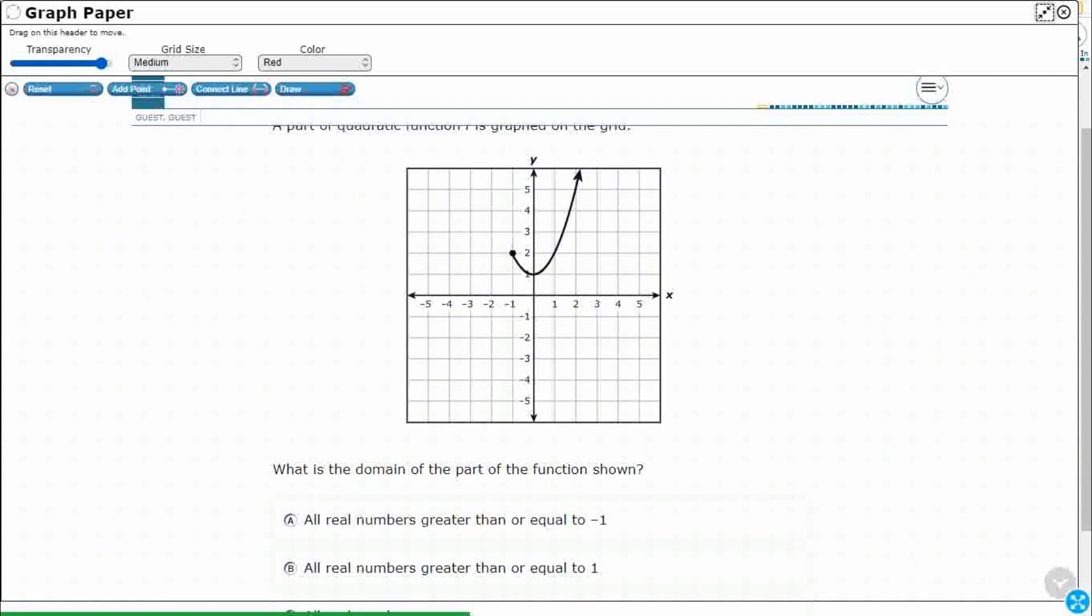So let's open up our Graph Draw feature. Let's define domain real quick. We'll also define range because those two are typically asked together and we could have been asked the range just as easily. So the domain is going to be the set of all possible independent variable values. Now for shorthand we'll say those are going to be our x values and so when we're looking for our domain we are looking side to side along the x-axis.